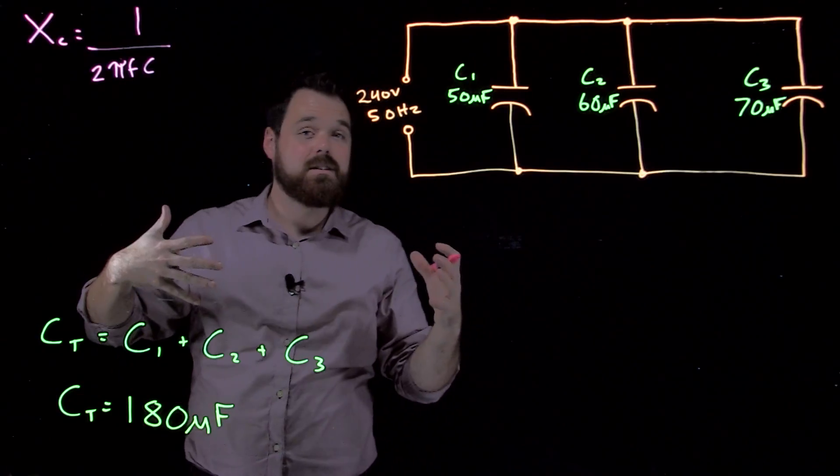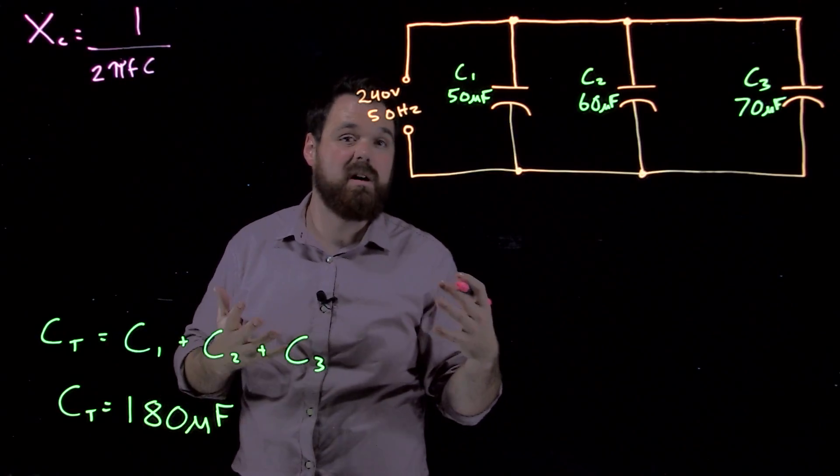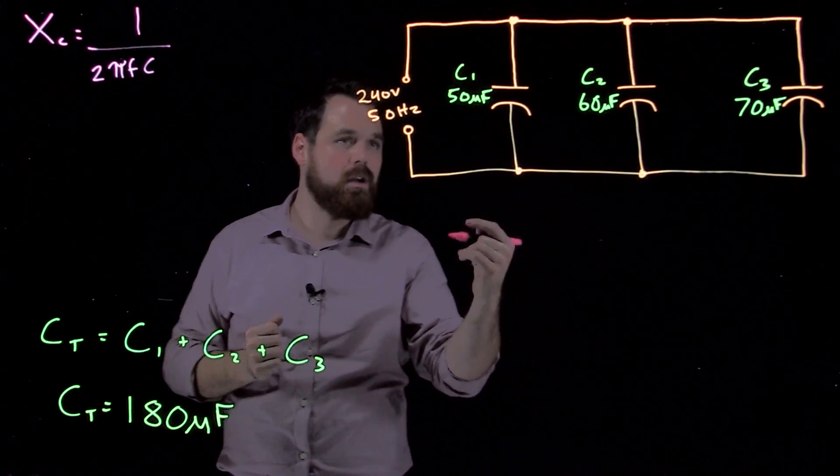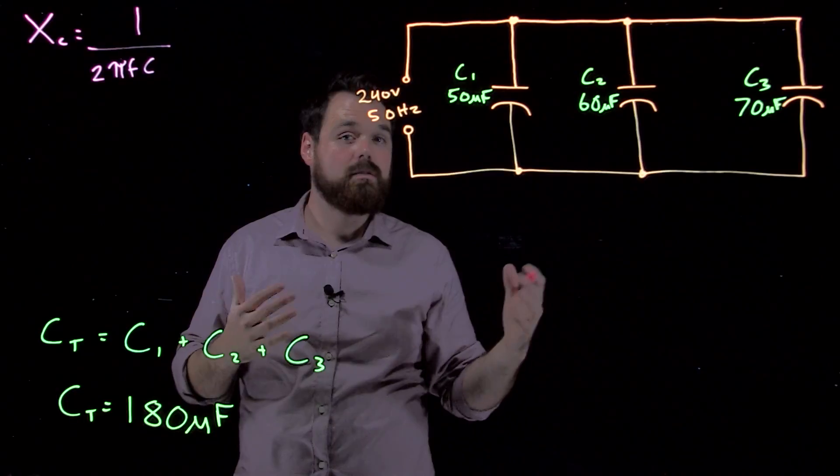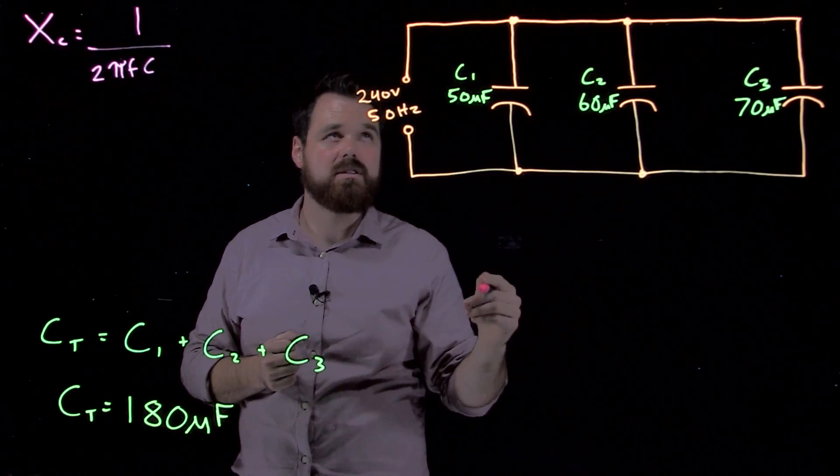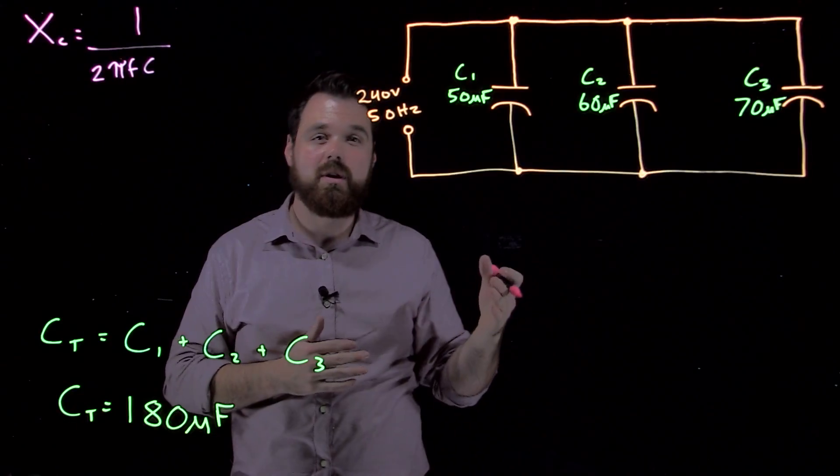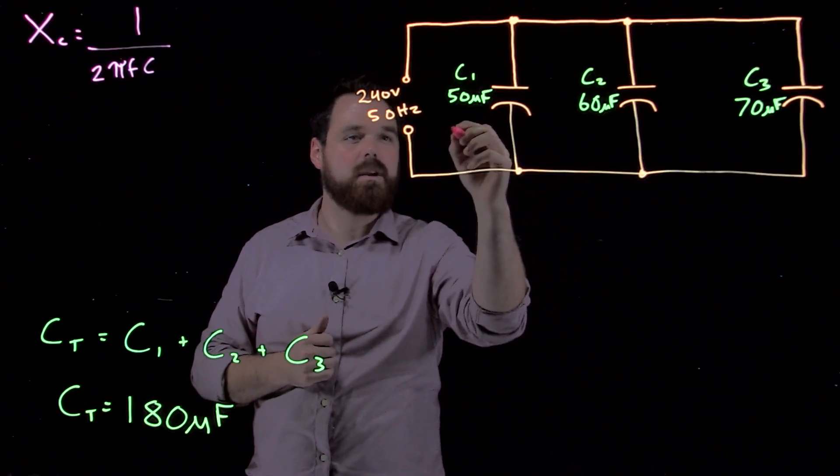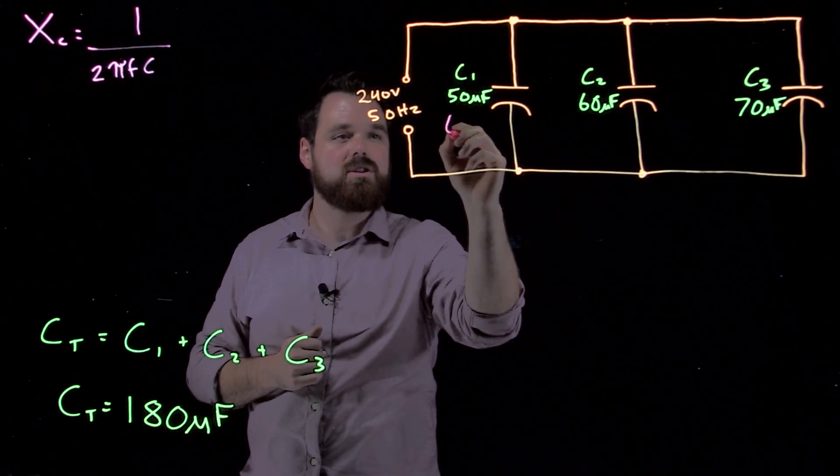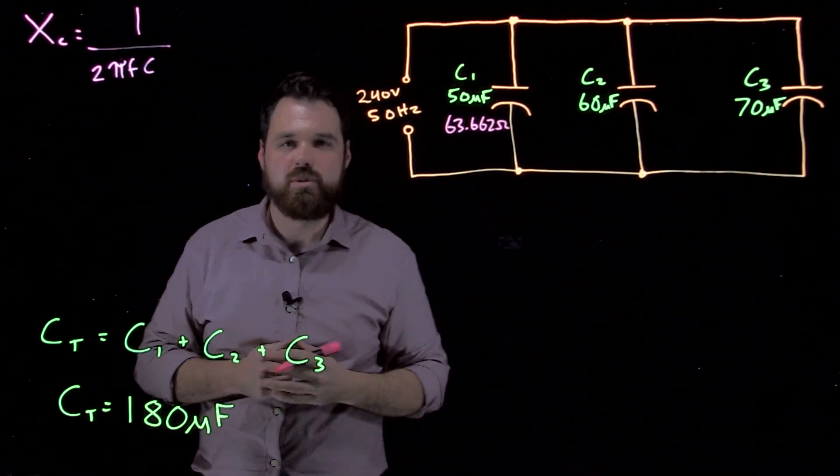If we are looking for the capacitive reactance in branch one, we'll use the capacitance of branch one. So XC1 is 1 divided by 2 times π times 50 Hertz times 50 microfarads or 0.00005 farads. It ends up giving us a capacitive reactance of 63.662 Ohms.